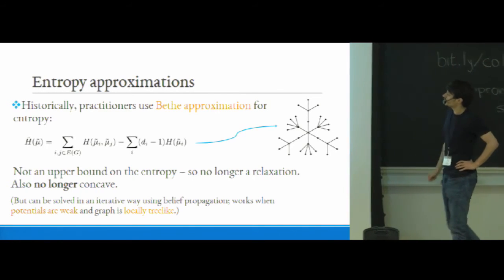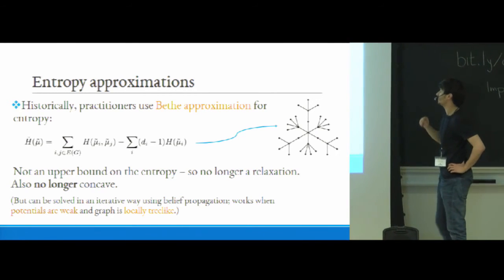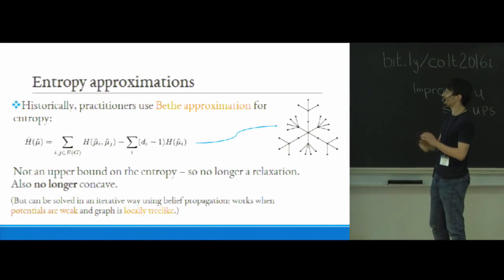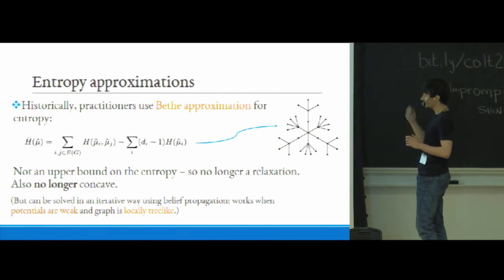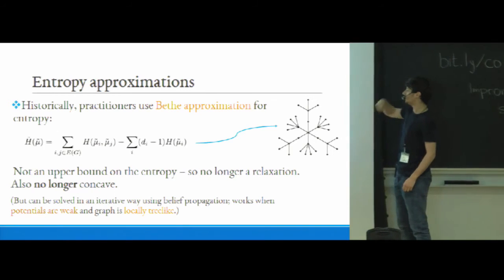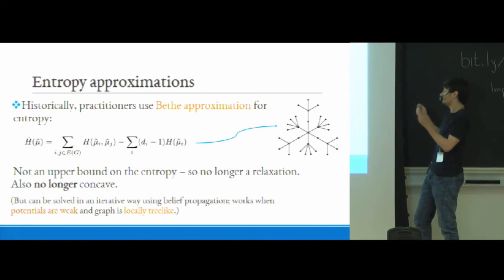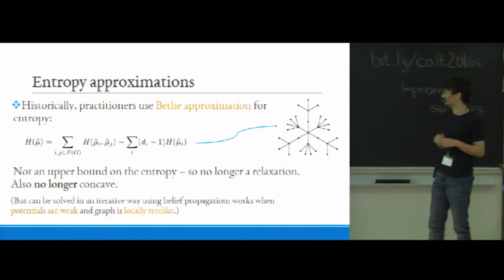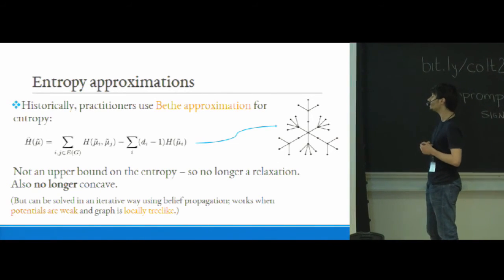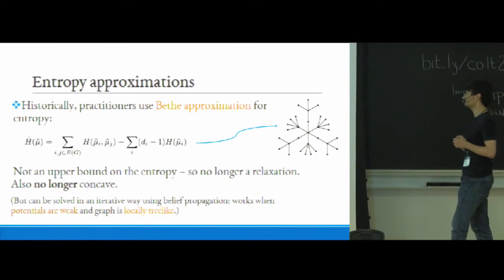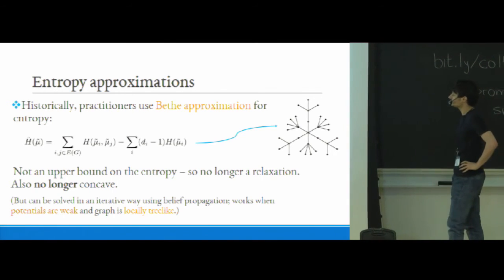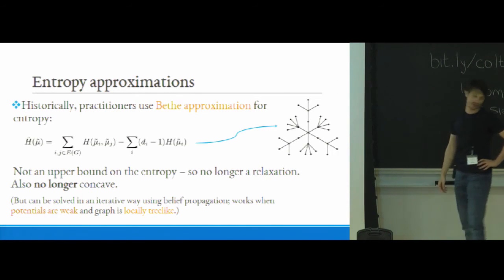So before telling you what I do, what do you know typically practitioners like doing here? So a popular choice is what's called the Bethe approximation. So I'm flashing the expression for that right there, but that's not sort of so relevant what the particular expression is. The way you get it is you assume that the Ising model is a tree, you write down the expression for the entropy which in this case only depends on the pairwise marginals, and then you use the same expression for any graph whether or not it's a tree. So there are two issues with this. First of all, this is not really an upper bound on the entropy of a distribution which matches some second-order marginals. So basically you're not really getting a relaxation anymore if you're going to use this functional. And second, this is not necessarily concave, so the problem you're left with is not just like convex minimization, so you're in trouble there as well. The reason why people like this in practice is that you can in principle try to solve this non-convex program with some sort of belief propagation. You can view belief propagation as some sort of iterative way to solve this relaxation, and then this typically tends to work when the potentials of the graph are sufficiently weak and the graph is locally tree-like.